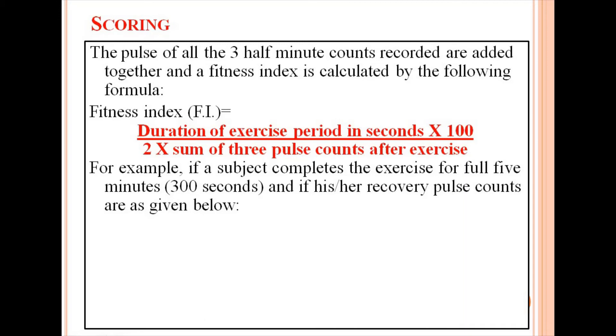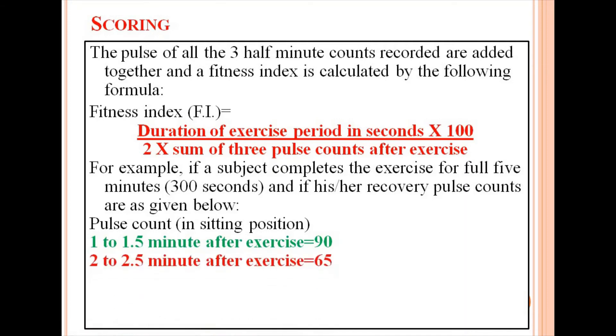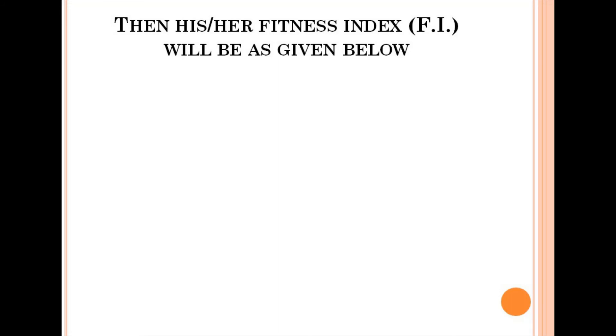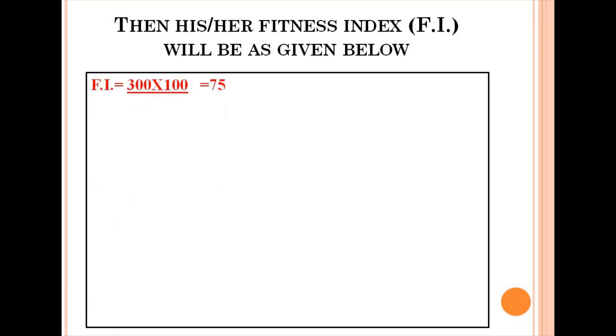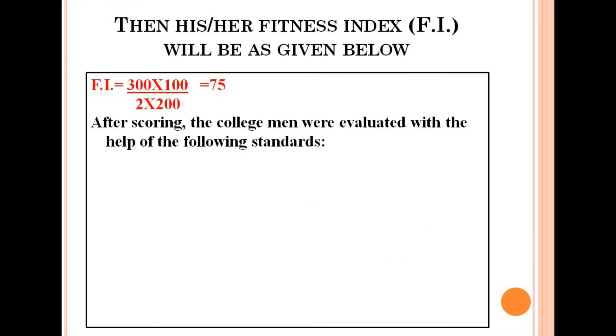For example, if a subject completes the exercise for full 5 minutes (300 seconds) and if his or her recovery pulse counts are as given below: Pulse count in sitting position 1 to 1.5 minute after exercise equals 90, 2 to 2.5 minute after exercise equals 65, 3 to 3.5 minute after exercise equals 45, sum of three counts equals 200. Then his or her fitness index FI will be as given below: FI equals 300 times 100 equals 75, divided by 2 times 200. After scoring, the college men were evaluated with the help of the following standards.